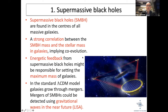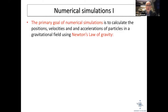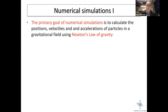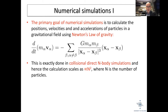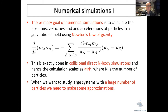What do we want to do in a numerical simulation? The primary goal is simple: calculate the positions, velocities, and accelerations of all particles in a gravitational field using Newton's law of gravity. In a collisional direct N-body simulation this can be done exactly, but the calculation scales as N-squared, where N is the number of particles. For large systems this is problematic — the Milky Way has 200 to 400 billion stars whereas a typical N-body simulation has only millions of particles.